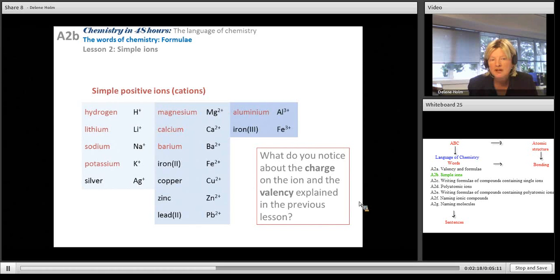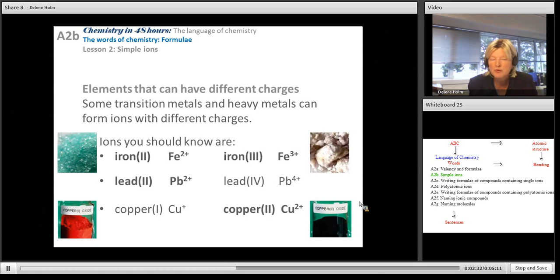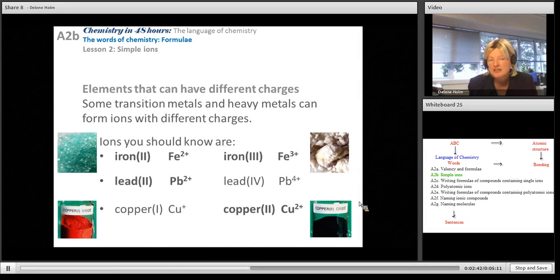You'll notice with ion 2 and ion 3, some elements can have variable charges. So you need to know these. The way it's done is we write the valency or the charge in brackets and we write them as Roman numerals. So iron 2 is Fe2+. Notice that the Roman numerals are written in the name and not in the formula.